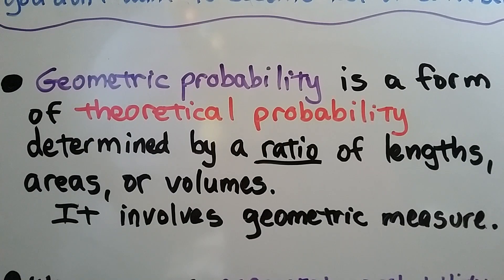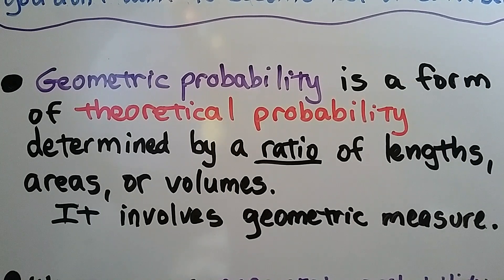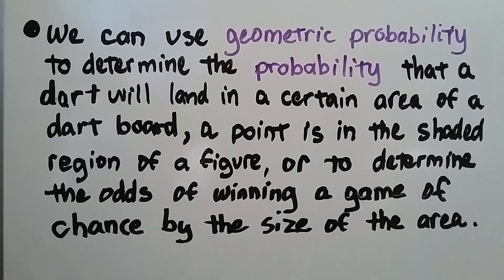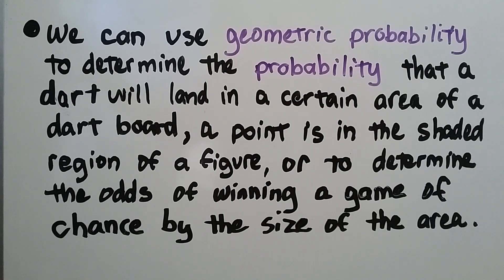Geometric probability is a form of theoretical probability determined by a ratio of lengths, areas, or volumes. It involves geometric measure. We can use geometric probability to determine the probability that a dart will land in a certain area of a dartboard, a point is in the shaded region of a figure, or to determine the odds of winning a game of chance by the size of the area.